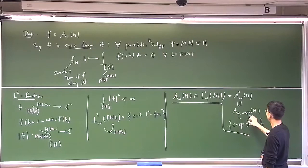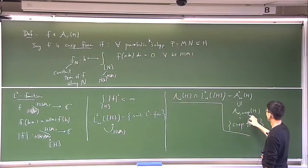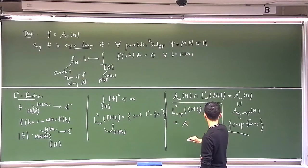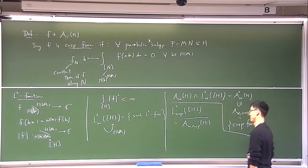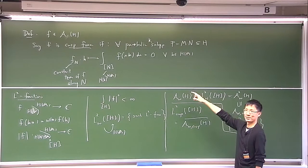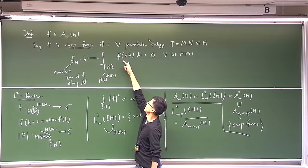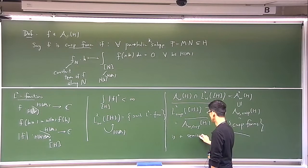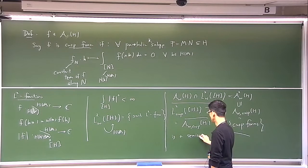That defines this space of cusp forms. One property of this space is that it's a subspace of L^2, so you can take the closure. You can set L^2_cusp(H) to be the L^2 closure of this space of cusp forms, because this may not be a closed subspace. And one property is that as an H_A module, this space is closed under right translation by H_A — because the condition to be satisfied is specified on the left, so right translating doesn't interfere.